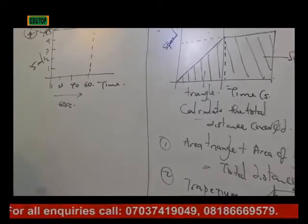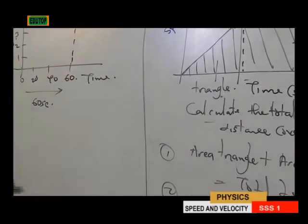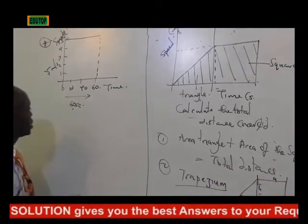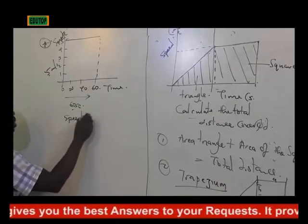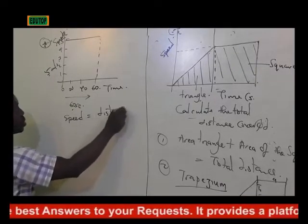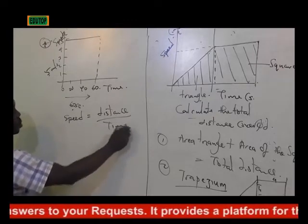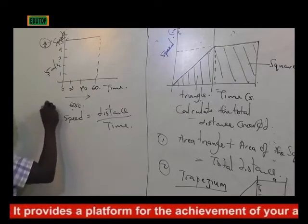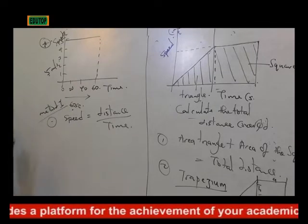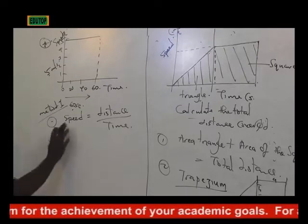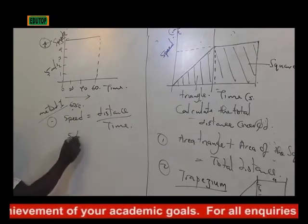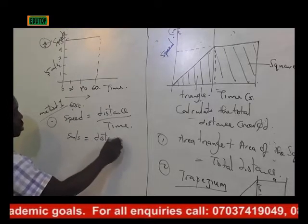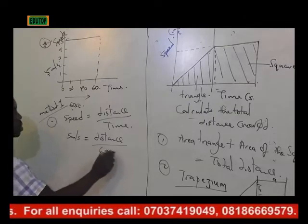Now, if you must calculate the total distance covered — this is 5 against 60. Remember, speed equals distance per time. This is Method 1: using the formula. Speed equals distance per time. Speed is 5 meters per second, so you say 5 meters per second equals distance divided by 60 seconds.